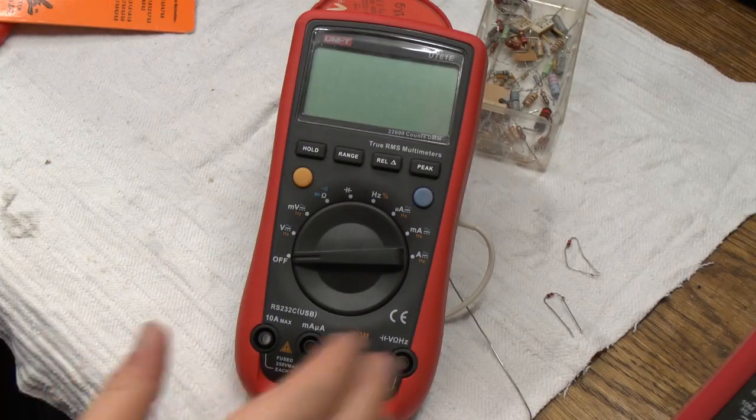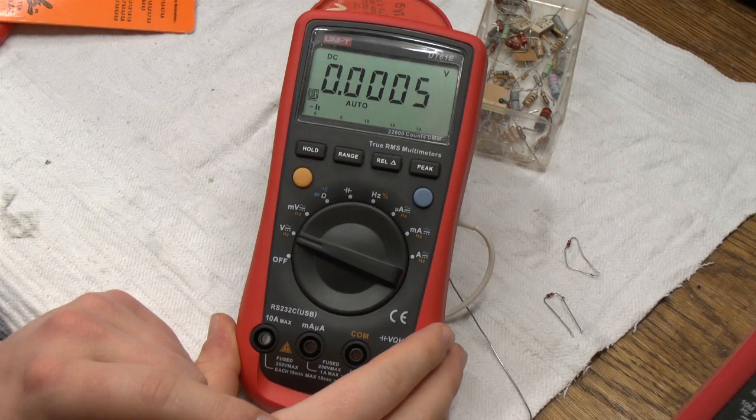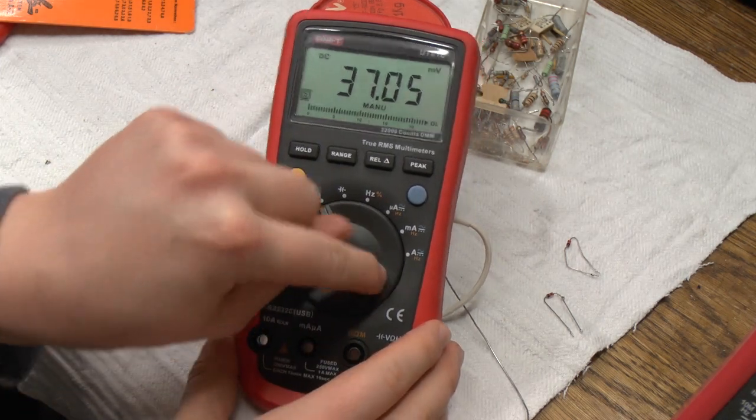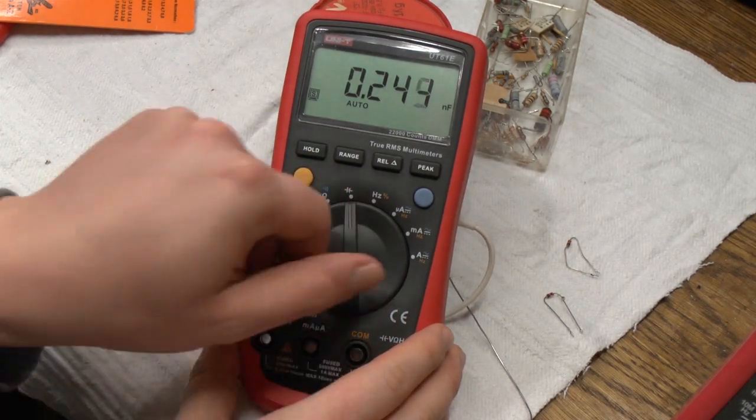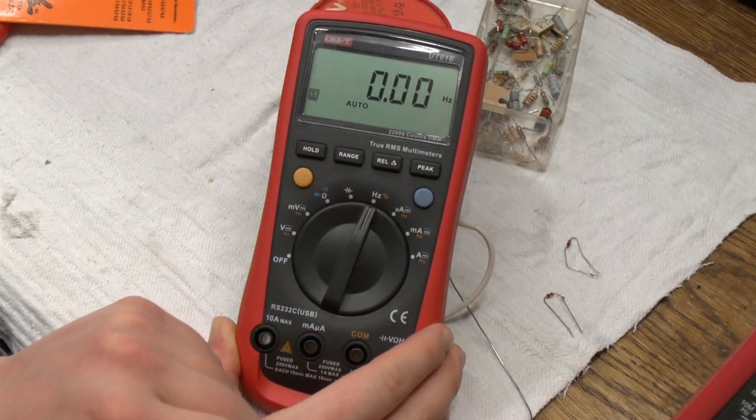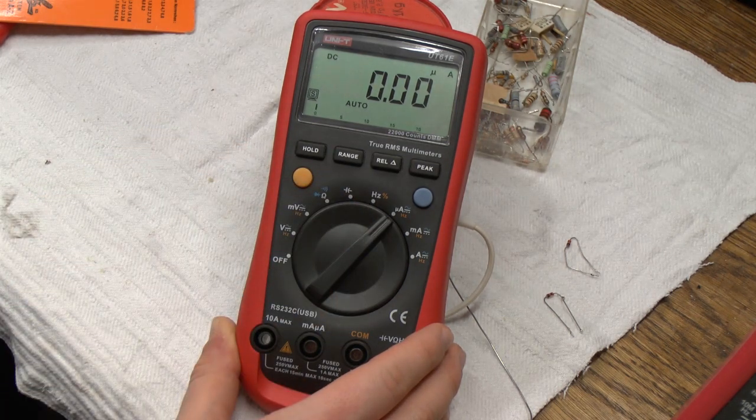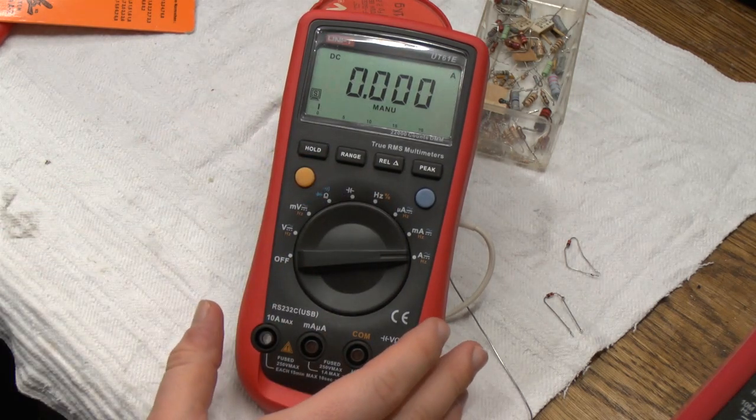But, if we now try out the meter, you can see we got volts when we are supposed to have volts, millivolts, resistance, capacitance, frequency, it has to restart for that for some reason, microamps, milliamps, milliamps, and amperes.